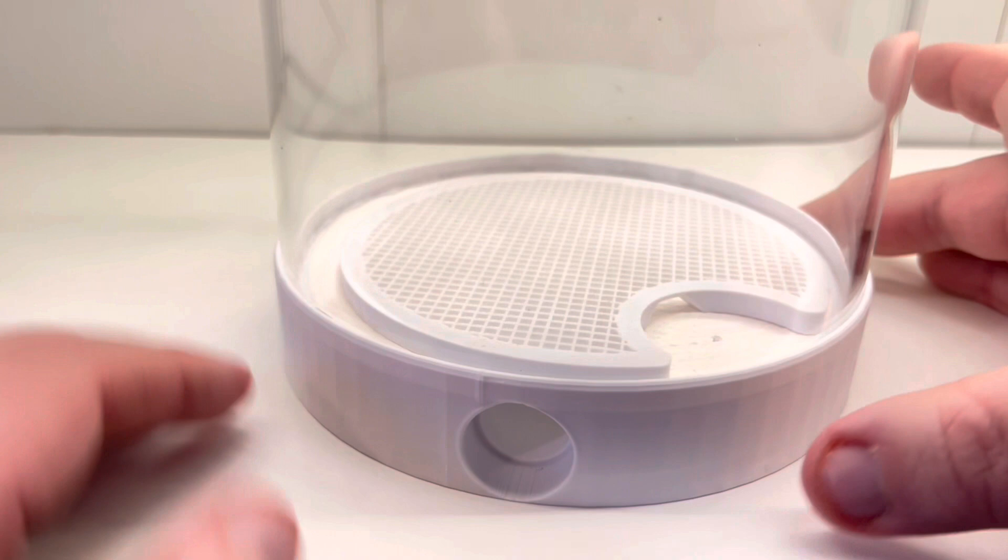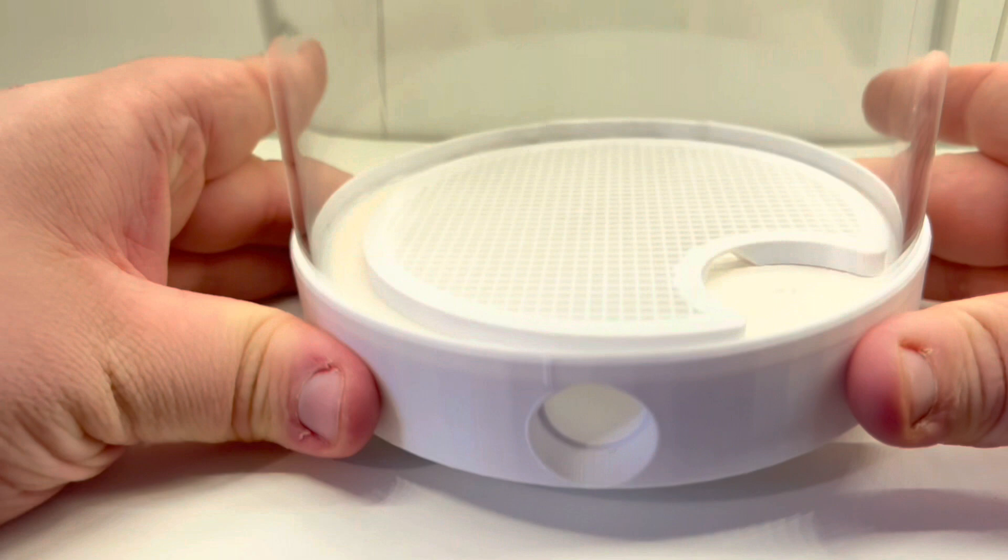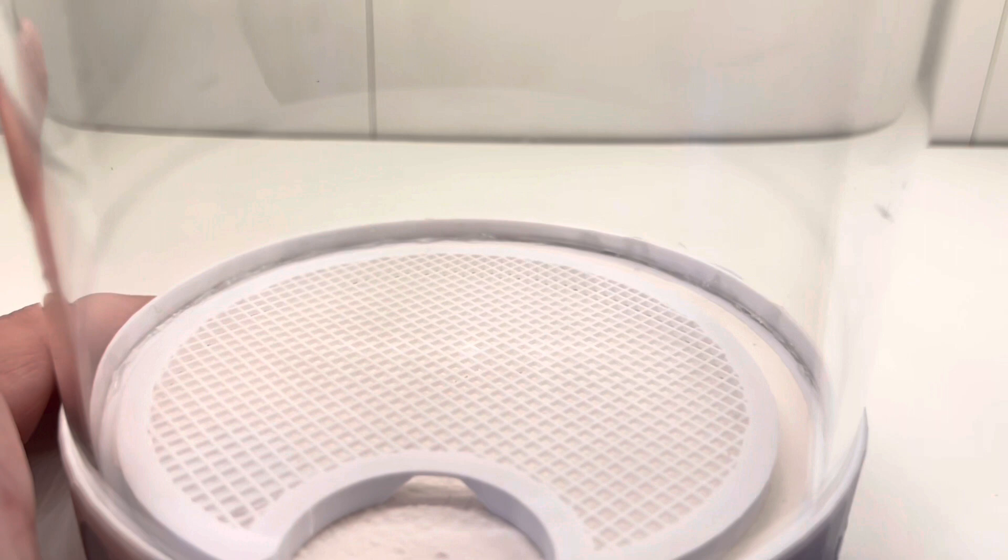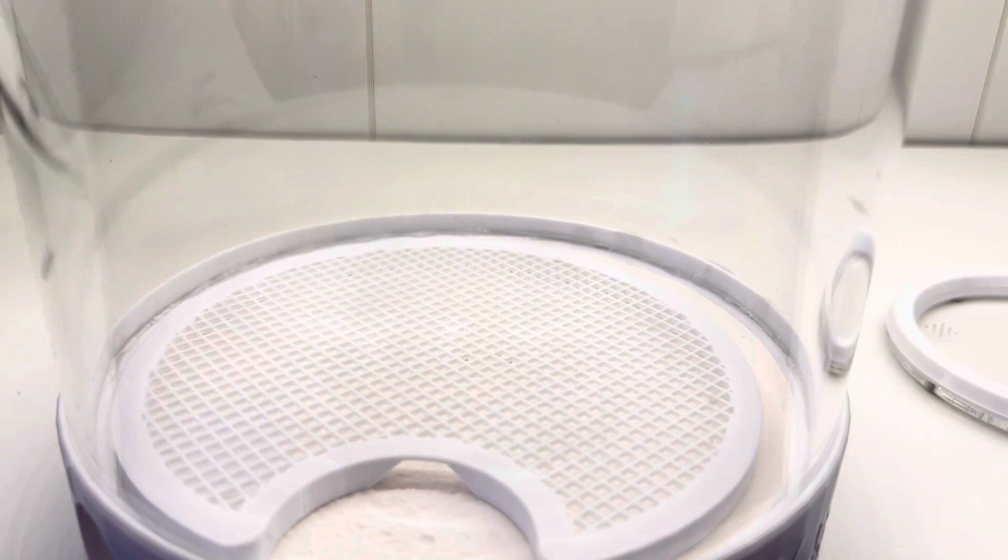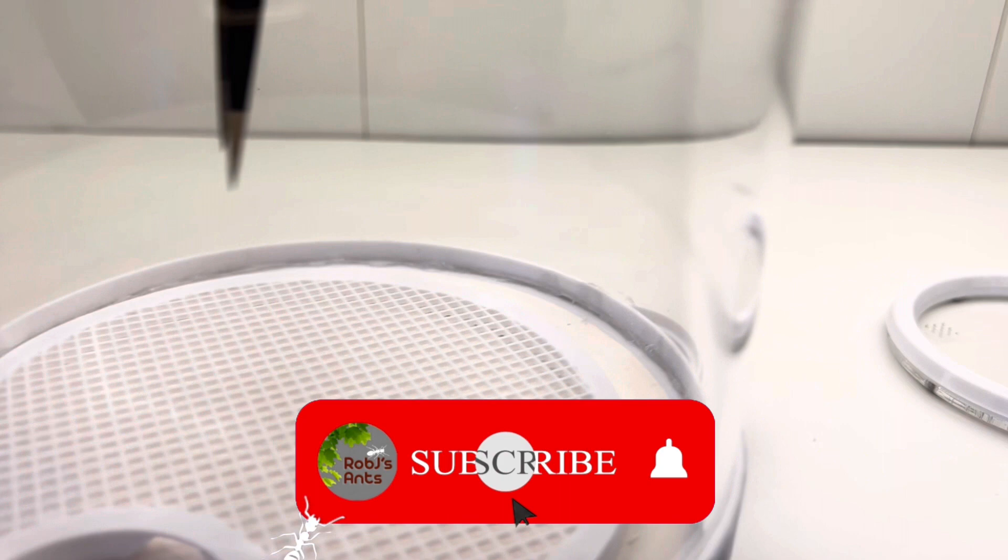Then inside we've got a raised mesh. This keeps the fungus garden from coming into direct contact with the wet surface. This is really important and very useful. But mine's just a bit out of line from shipping. So I'm just going to line mine up with the expansion port. And there we go. That's how it should look.